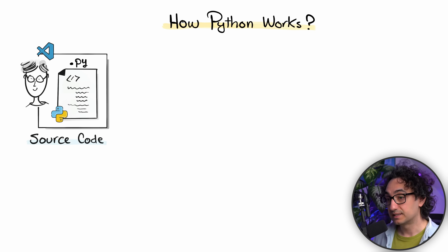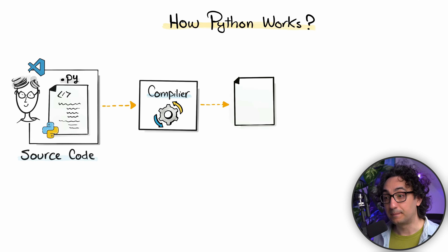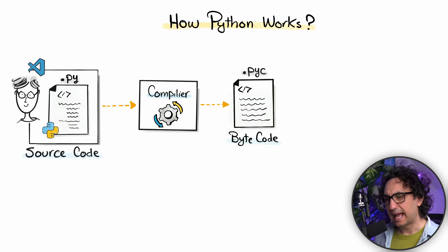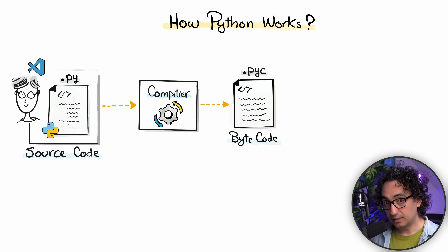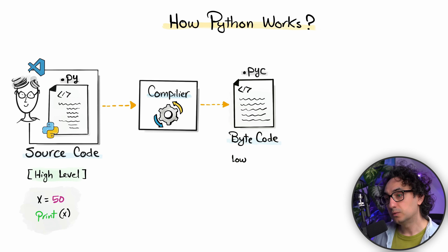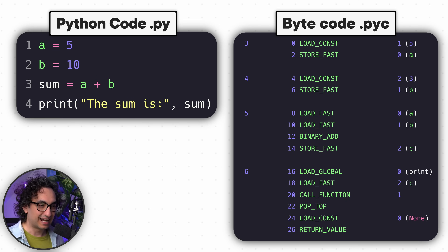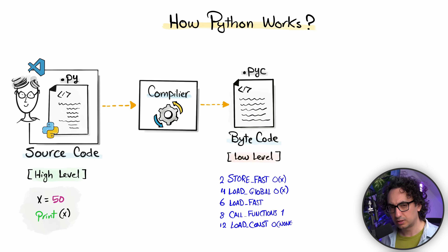There is something called a compiler. In Python, it takes your Python code and translates it to another code called bytecode, with the extension .pyc (Python compiled). This can happen automatically and you will not even notice it. The compiler translates the high-level Python code to a low-level language — the bytecode — and as you can see, bytecode is really hard to understand compared to Python code.